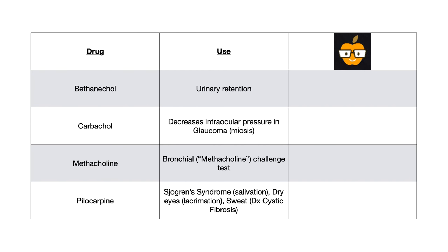Bethanechol is used in urinary retention. Carbachol is used to decrease intraocular pressure in glaucoma because it causes miosis. Methacholine is used in the bronchial challenge test — sometimes called the methacholine challenge test — to help diagnose asthma. Pilocarpine is used in the treatment of Sjögren's syndrome, for dry eyes because it causes lacrimation, and in the sweat test to diagnose cystic fibrosis because it increases secretions.